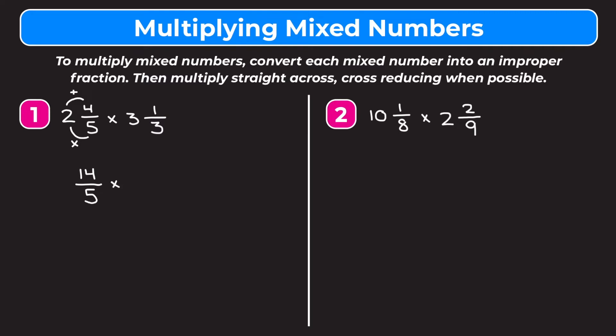We're going to do the same thing for 3 and 1 third. Multiply 3 by 3 which is 9, add the numerator of 1 to get 10 — that's our new numerator. Keep our denominator as it is. So 3 and 1 third is equal to 10 thirds. And now we're going to multiply across, cross reducing and simplifying if possible.